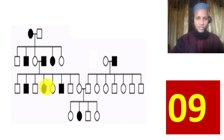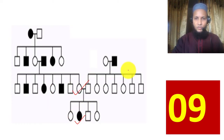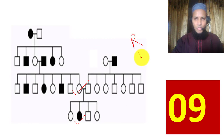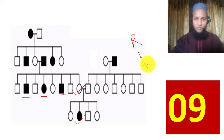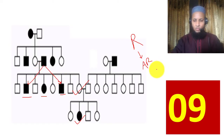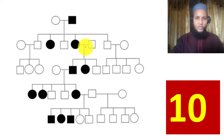Example 9: There is skipping of generation, so it is recessive. Both males and females are affected, so this is not X-linked. This is likely autosomal recessive, confirmed by the presence of male-to-male transmission.